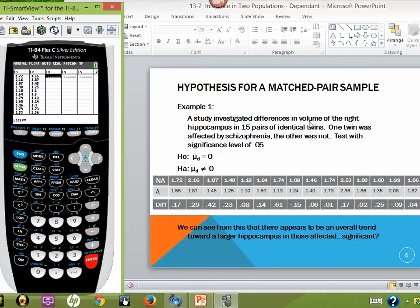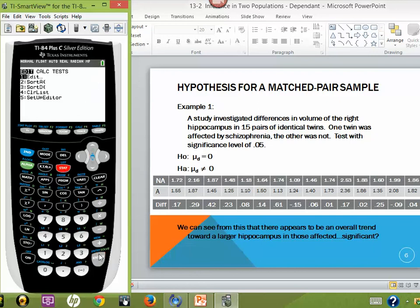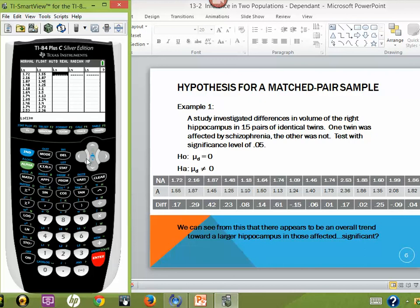We're going to put these into list one and these into list two. Put these into list one and list two. Remember you do that by going to stat and then edit. If you have things in your list already, highlight L3 and hit clear and then enter, and that will highlight whatever list you're wanting to erase. Pause the video and do that.